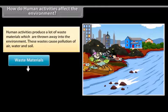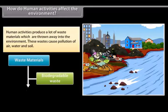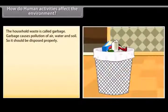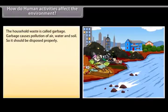The waste materials produced are of two main types. They are biodegradable waste and non-biodegradable waste. The household waste is called garbage. Garbage causes pollution of air, water and soil.